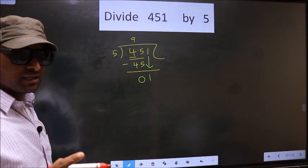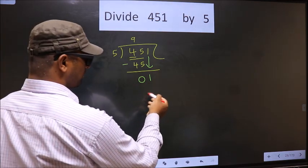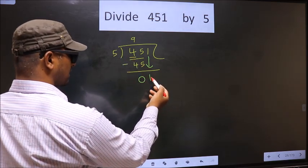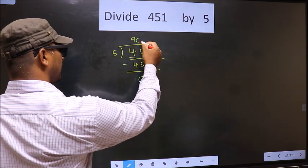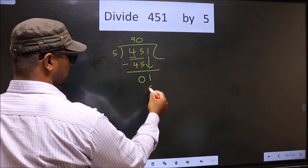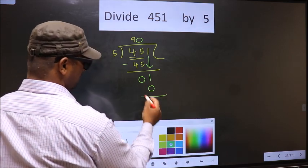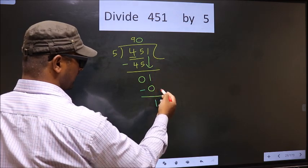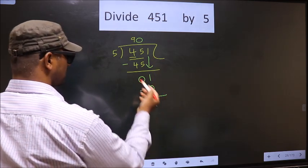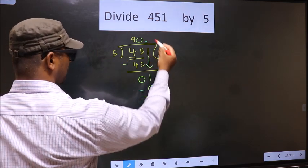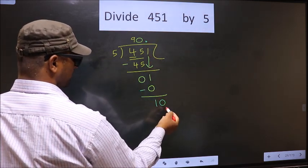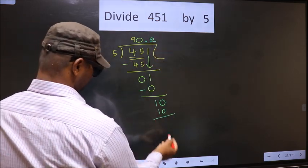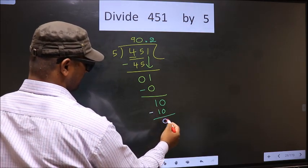Instead, what you should think is: what number should we write here? If we write 5 here, that is larger than 1. So what we do is we take 0 here. So 5 into 0 is 0. Now you subtract — 1 minus 0 is 1. Over here we did not bring any number down, and here 1 is smaller than 5. So we put a dot and take 0. Now here 10. When do we get 10 in the 5 table? 5 twos, 10. Now you subtract — 10 minus 10 is 0.